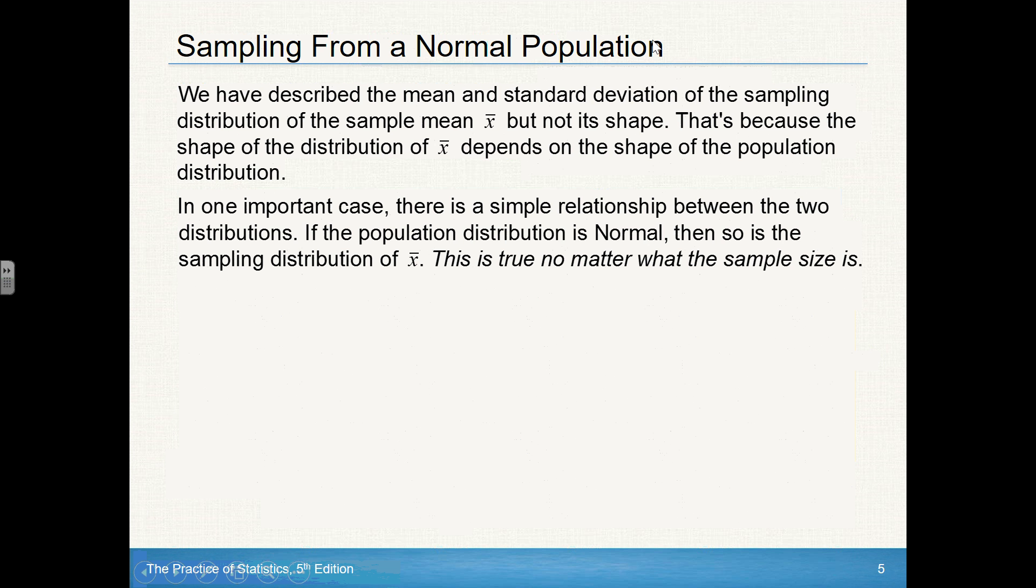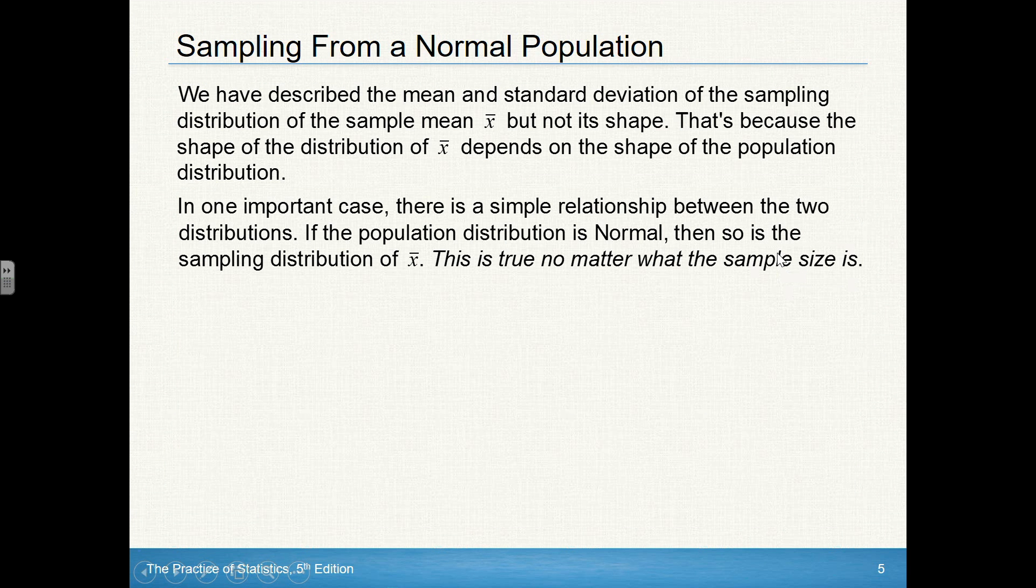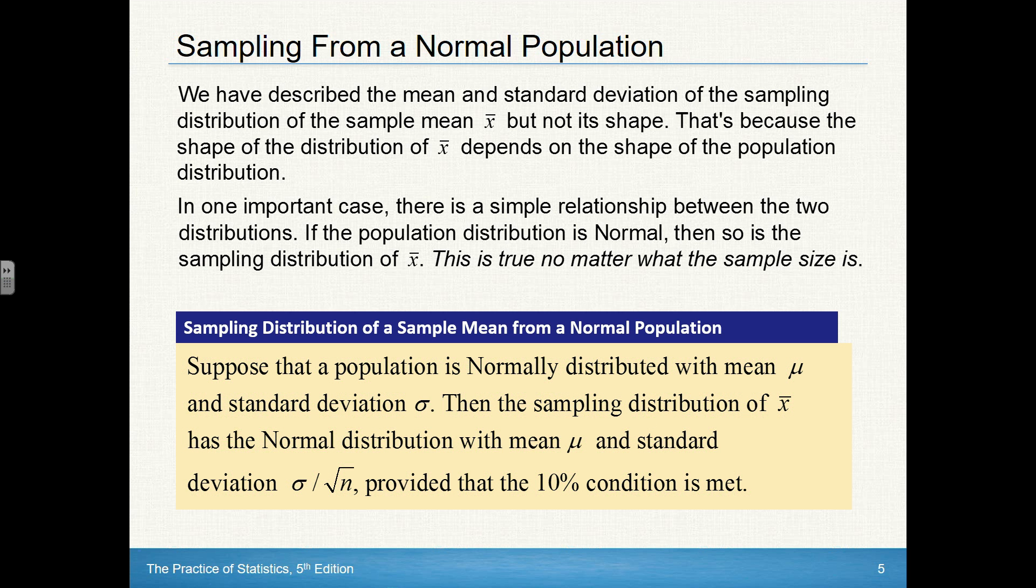Now, if we're sampling from a normal population, sample size doesn't matter at all. Your sampling distribution is going to be approximately normal. So you want to look for that phrase, is approximately normal. And if you see that in the problem, you know your sampling distribution is approximately normal and you're good. You don't have to worry about anything else. Again, as long as the 10% condition is met.